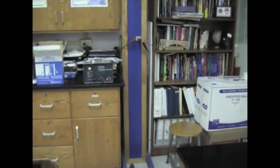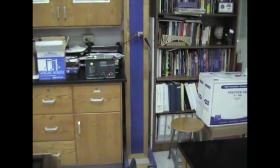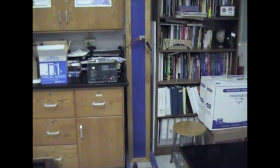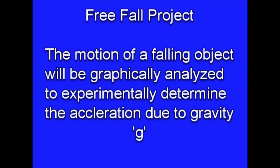We're going to figure out the acceleration due to gravity using this device right here. It's called a free fall device. We're going to analyze the distance-time graph and the velocity-time graph to figure out the acceleration of gravity on the Earth. We're going to use a device known as a spark timer.